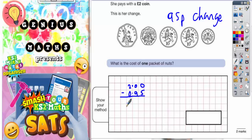Now some of you could probably do that in your head, and the answer is one pound five pence. But if you can't do it in your head, let's have a look.